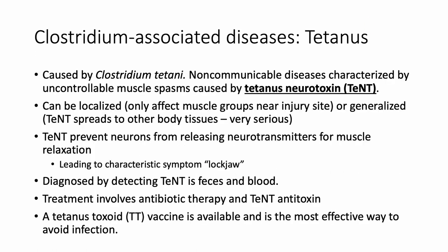Now we'll discuss Clostridium-associated diseases, starting with tetanus. Tetanus is caused by Clostridium tetani and is a non-communicable disease — not transmitted human to human. It is characterized by uncontrollable muscle spasms caused by the release of tetanus neurotoxin (TeNT). The infection can be localized near the site of injury or generalized, spreading to other tissues. The neurotoxin prevents neurons from releasing neurotransmitters required for muscle relaxation, causing muscles to seize up.